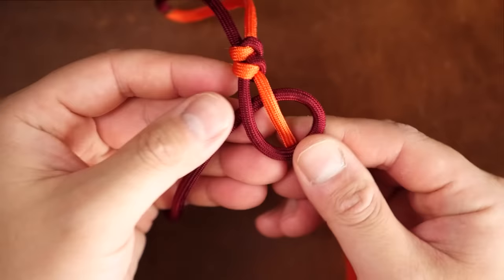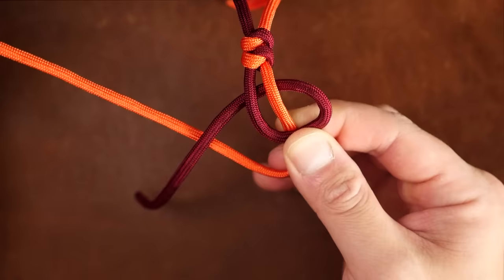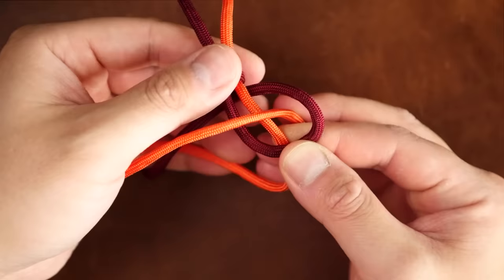For a counterclockwise snake knot, I'm going to take the burgundy strand and make a counterclockwise loop around the orange. Then take the orange and go behind the burgundy, come back in front, and through the burgundy loop to the right of the orange.